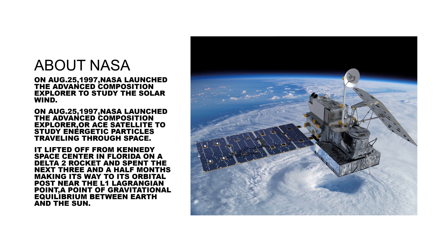The ACE satellite lifted off from Kennedy Space Center in Florida on a Delta II rocket, and spent the next three and a half months making its way to its orbital post near the L1 Lagrangian point — a point of gravitational equilibrium between Earth and the sun.